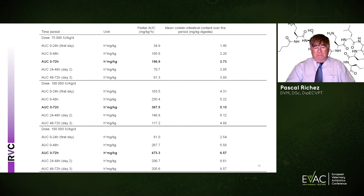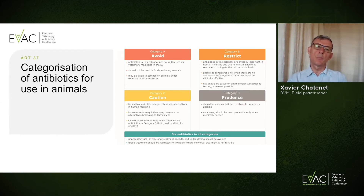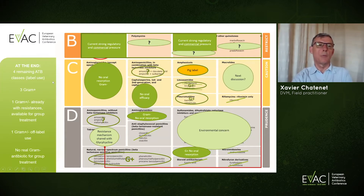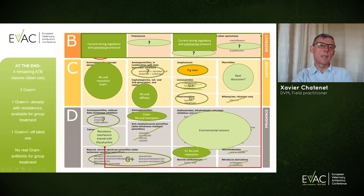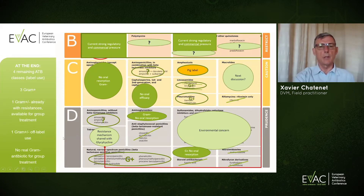EMA is proposing a categorization of antibiotics for use in animals, mostly based on the human need of those antibiotics. At the end, we have four remaining antibiotic classes for poultry use. Three are gram-positive oriented, meaning they are useless for most of the illnesses we are facing. One is gram-positive and gram-negative but with resistance already present. And one — florfenicol — covers both gram-positive and gram-negative but is off-label use and always complicated to use. So we have no really efficient gram-negative antibiotics for group treatments.